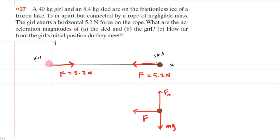We know the girl is exerting a horizontal 5.2 Newton force on the sled, and we've drawn that force acting on the sled to the left in this diagram. We've also drawn a free body diagram of the sled, showing the force that the girl is exerting on the sled, again pointing to the left.